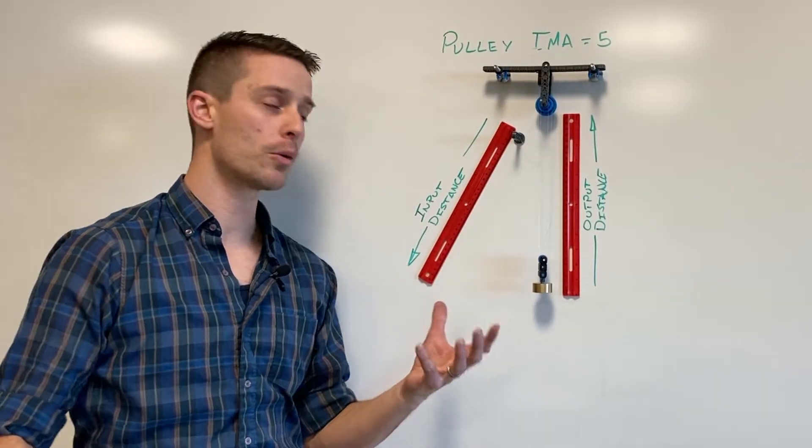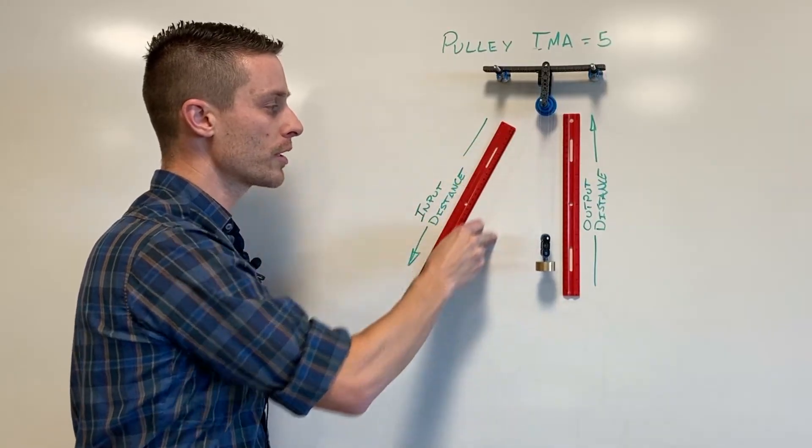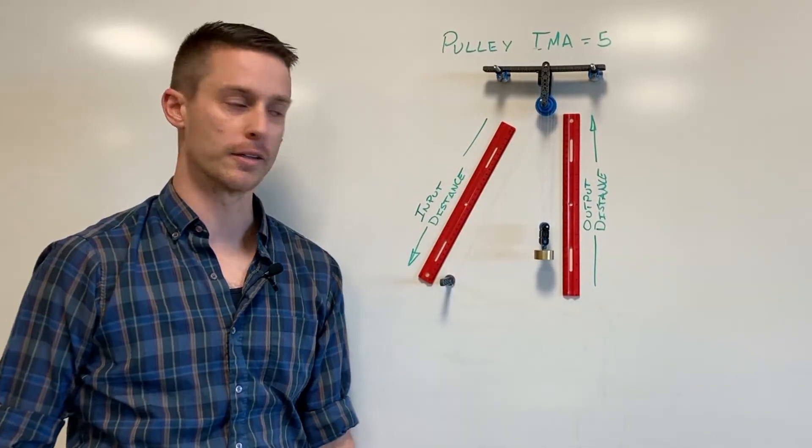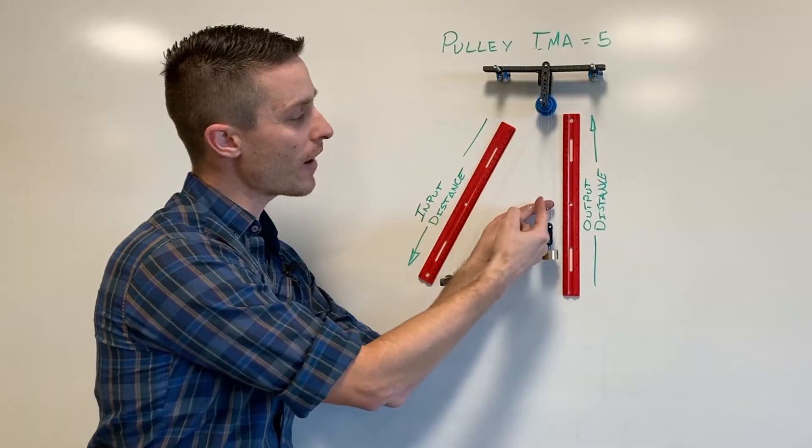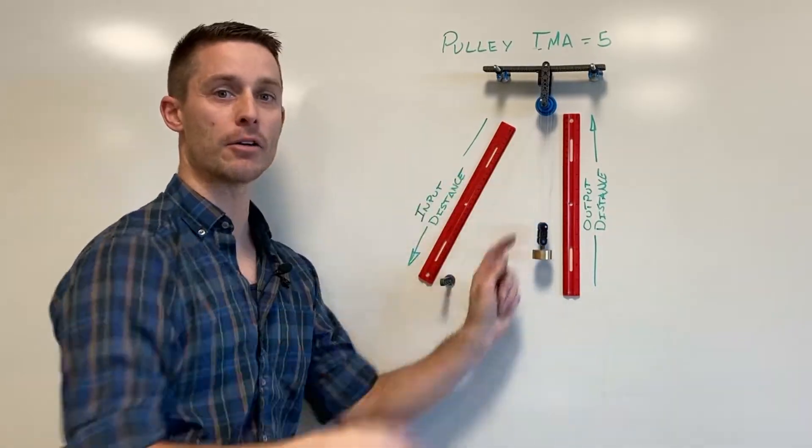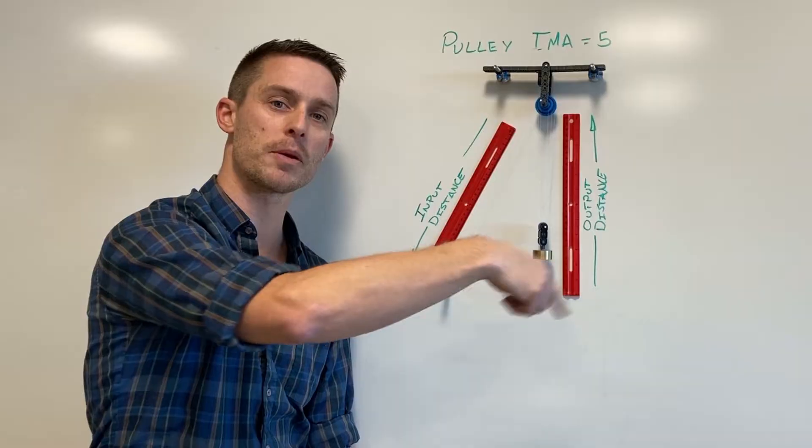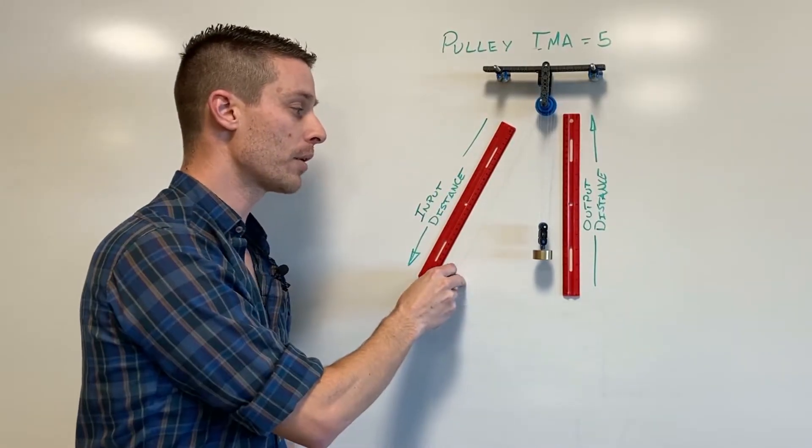But what people don't realize typically is that this string is all one string. Here there's actually five strands going up and down but realize it's all one continuous string that's just been wrapped and wrapped and wrapped around on itself.